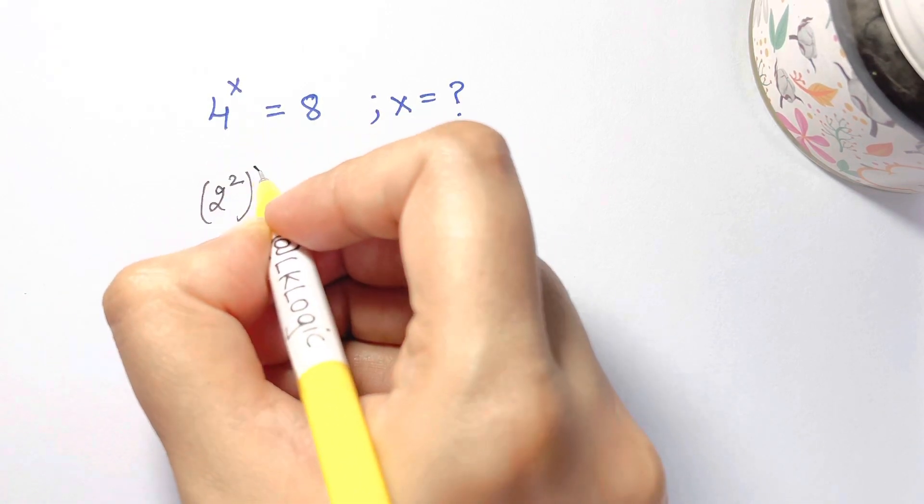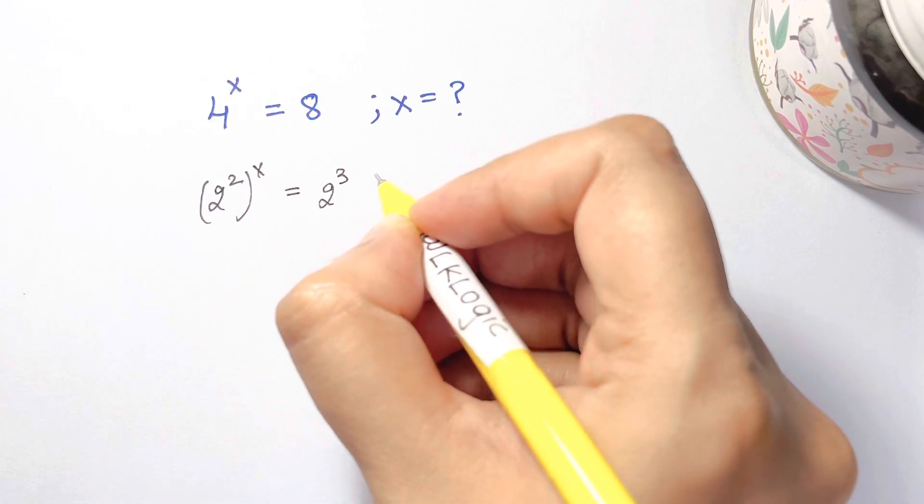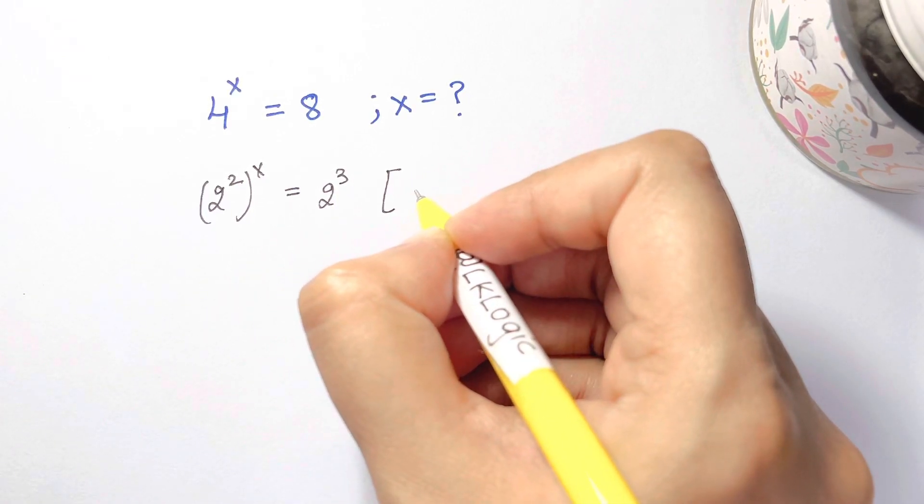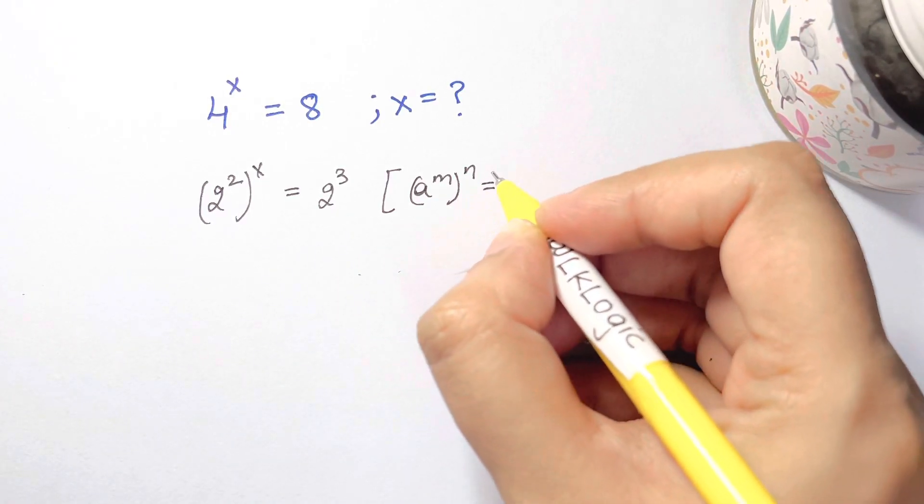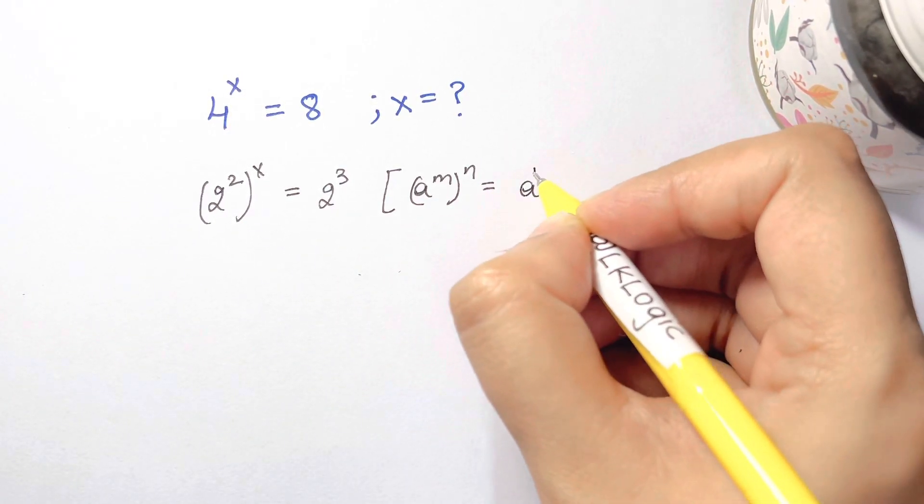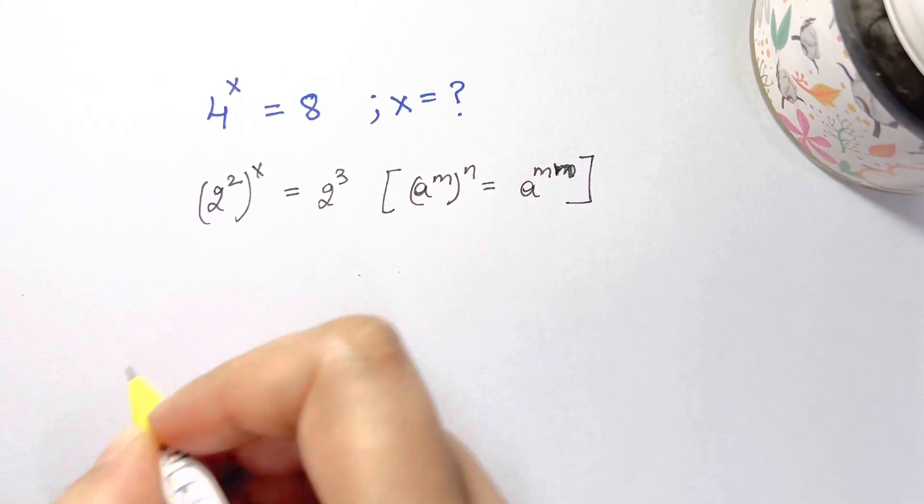Then we have the whole to the power of x, and 8 can be written as 2 cubed. Now we're going to apply this law which says a^m to the power of n is equal to... whenever you have powers to power, you multiply the powers m times n.